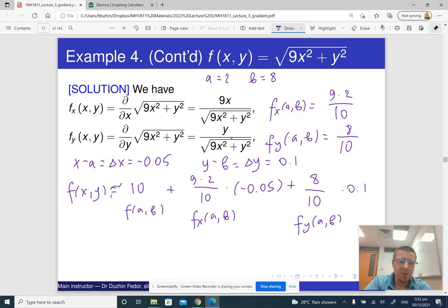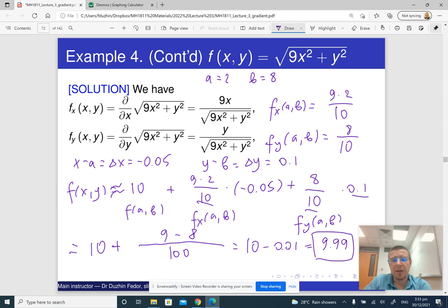Well sorry, this is approximately equal, because this is just an approximation. So this equals 10, plus, look there is 10 here, 10 here, and there is one tenth here. So this is essentially division by 100. So let me just write 100. This is like nine minus eight over 100. So this is really just 10 minus 0.01, which is 9.99. So this is the linear approximation.